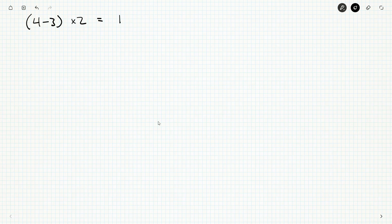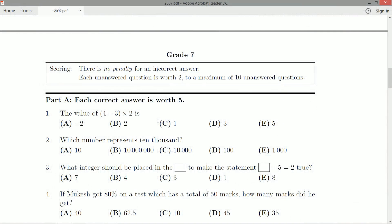So 4 - 3, we change that to a 1. The times 2, we haven't done anything with that yet. And then 1 × 2 is 2. Anything times one is just that anything again. So our final answer is going to be 2, and we would bubble in B if we actually have the bubble sheet that they give us. I don't, so I'm just going to write it down. But (4 - 3) × 2 is in fact 2.